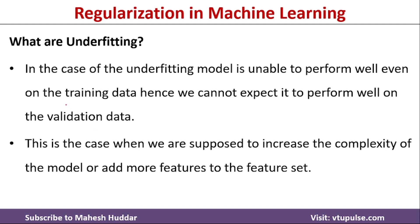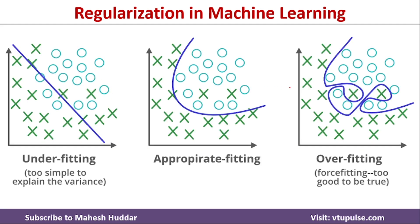Once the model starts working well on the training data, then we concentrate on whether it works fine on the validation or testing data. Looking at examples of underfitting, overfitting, and appropriate fitting: the first model is performing very poorly on the training data — it is a too-simplistic model where many examples are incorrectly classified, so it is called underfitting.